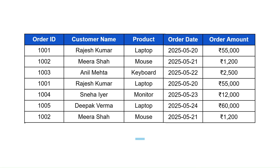Today we are going to deal with this sample orders dataset where we have five columns: order ID, customer name, product purchased by the respective customer, order date which is the date on which the order was purchased, and order amount which is the amount the customer paid. This sample dataset also has some duplicate rows, and we are going to understand how to eliminate those and how to sort the rows based on any column. Let's dive into MySQL Workbench.